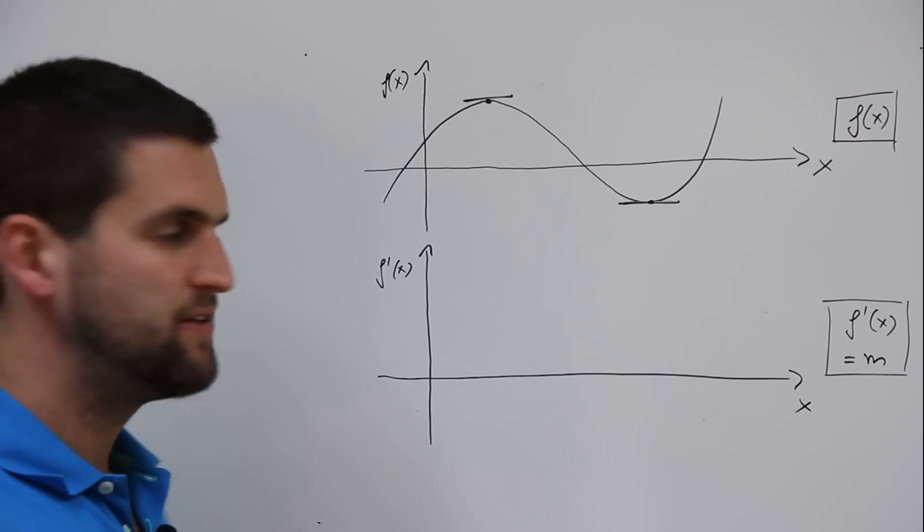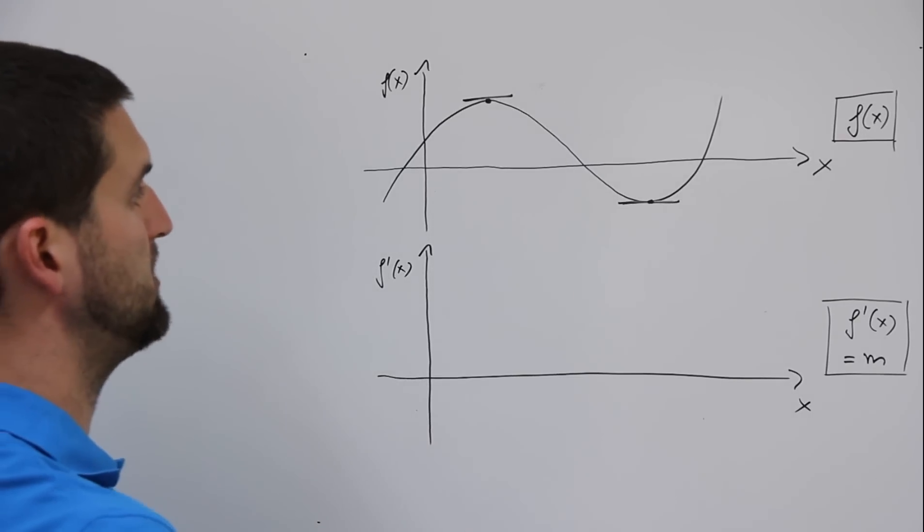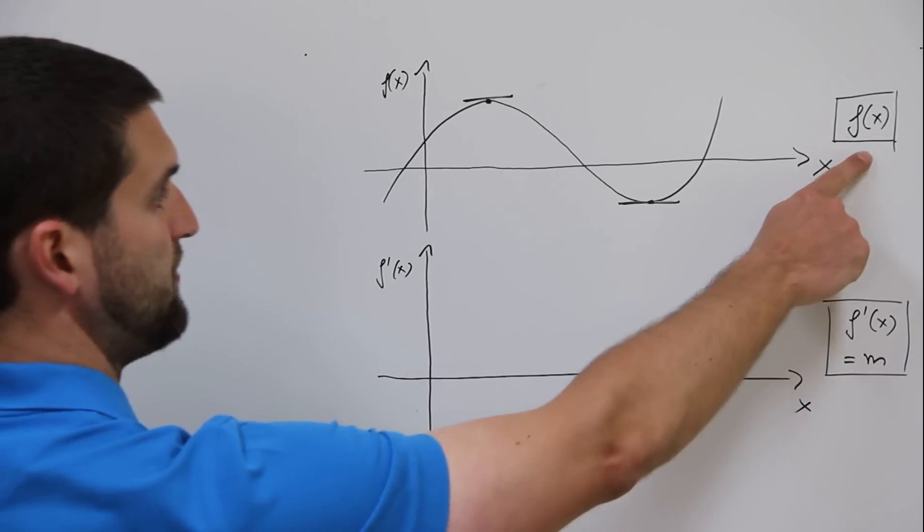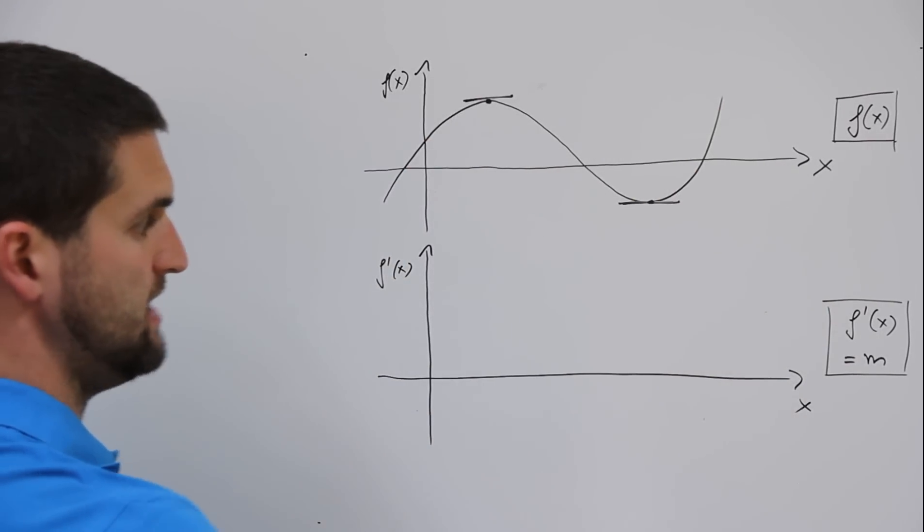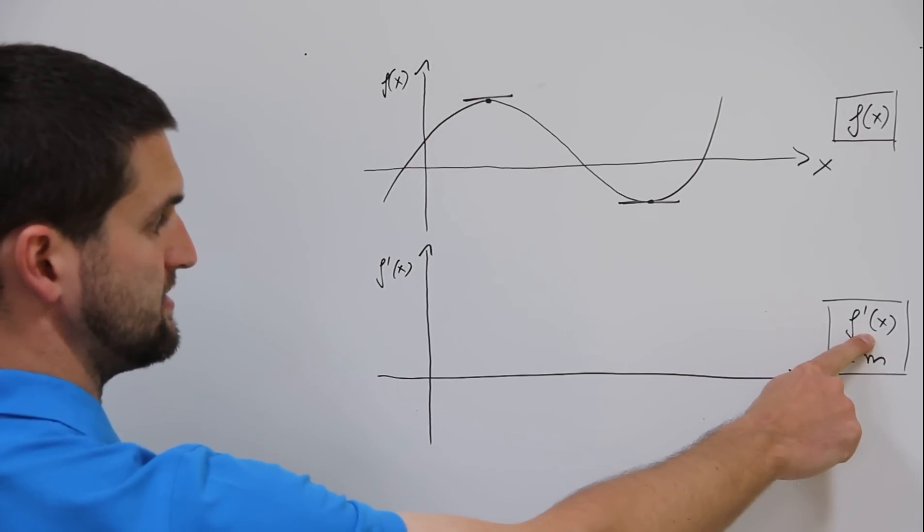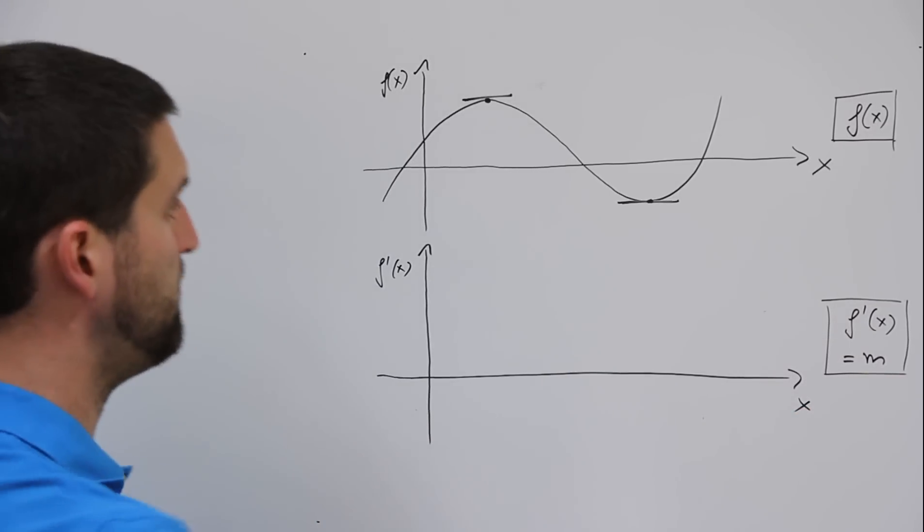So let's make the derivative of a function graphically. We have a perhaps polynomial function f of x with the graph of f of x. F prime of x, the first derivative, equals m, equals the slope of every point